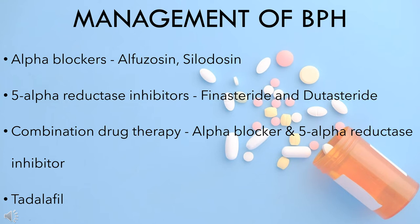Drugs used in the treatment of benign prostatic hyperplasia are alpha blockers such as alfuzosin and silodosin, 5-alpha reductase inhibitors like finasteride and dutasteride, combination drug therapy using alpha blockers and 5-alpha reductase inhibitors, and tadalafil.